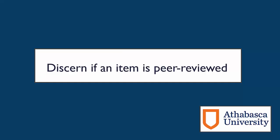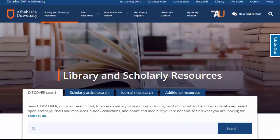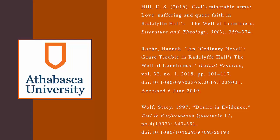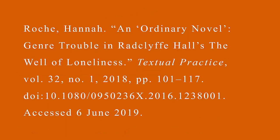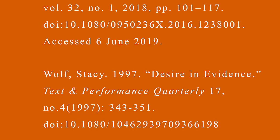There are many ways to find out if a journal is peer-reviewed. Articles are published in journals, so you'll need to look at the journal your article is published in. You can find the title of the journal in your article's citation. Try picking out the journal title in this APA citation — it would be Literature and Theology. What about in this MLA citation? It would be Textual Practice. And in the Chicago one? The italicized text: Text and Performance Quarterly.